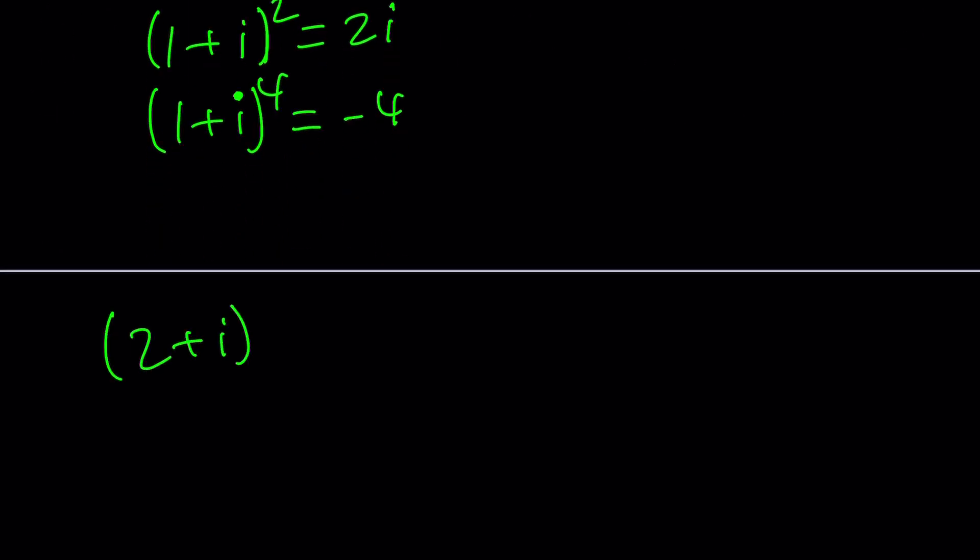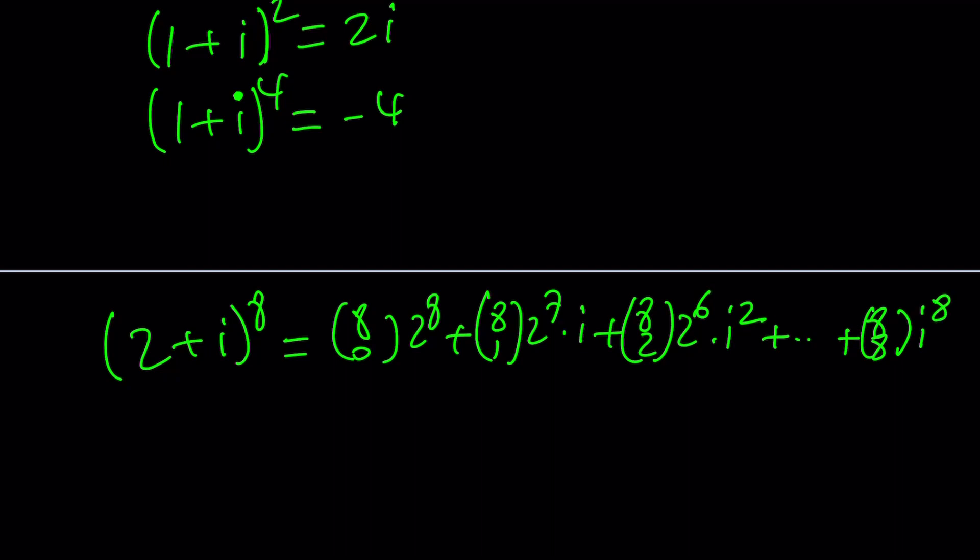I can go ahead and take this to the 8th power and then use the formula. Remember the formula goes like this: 8 choose 0, 2 to the 8th power, and then you'll have 8 choose 1, 2 to the 7th, and then you'll introduce the i, and then 8 choose 2, 2 to the 6th. But then you'll have a higher power of i and they'll just switch around, until you hit 8 choose 8 which is 1 times i^8. A lot of these powers of i can be easily evaluated. For example, i^2 is -1, i^3 is -i, i^4 is 1, i^8 is 1, so on and so forth. But then at the end you kind of have to combine like terms and that's going to be a lot of work. But it can still be done.